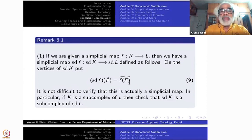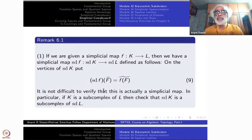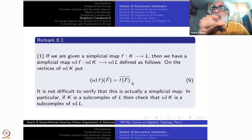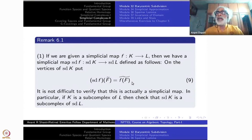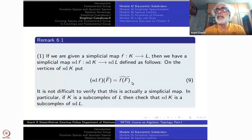You have to verify this is a simplicial map — it should take simplices to simplices. A simplex on the left is a chain F₀ ⊂ F₁ ⊂ F₂; the images f(F₀), f(F₁), f(F₂) will form a chain in L. Some of these may become equal — it does not matter; throw away the equal ones and write the proper chain. You get a simplex of whatever lower dimension. So this is a simplicial map automatically. Once you define a vertex map between simplicial complexes, you have no other freedom — you just verify whether it is a simplicial map.